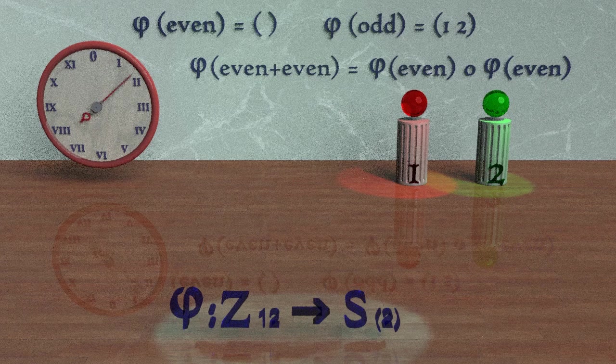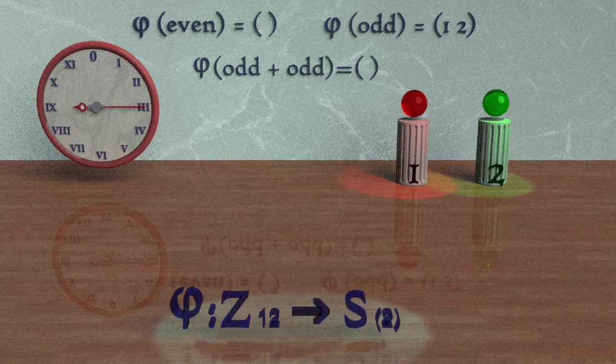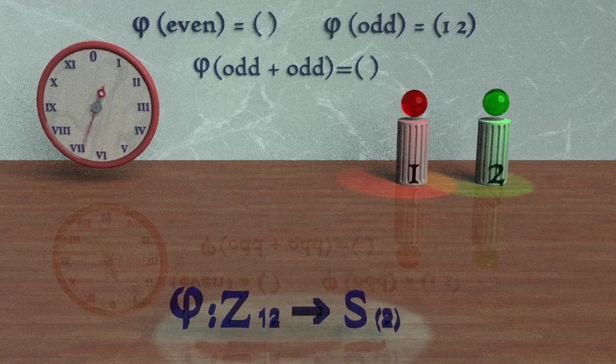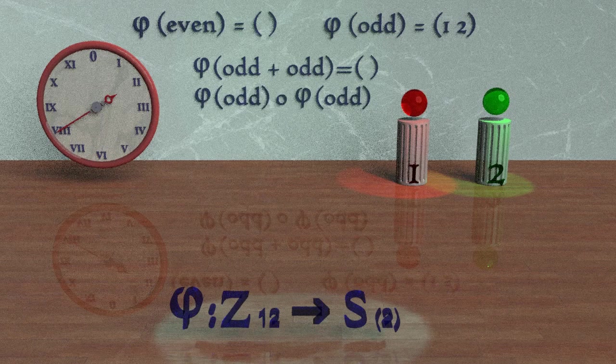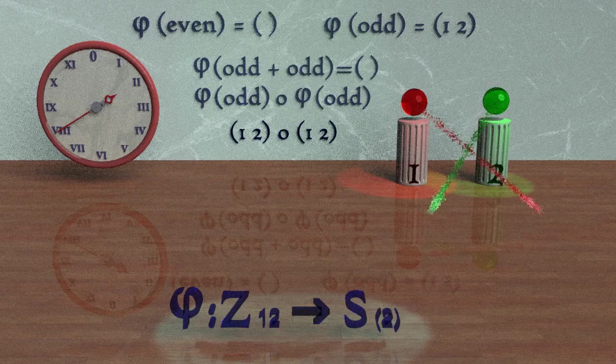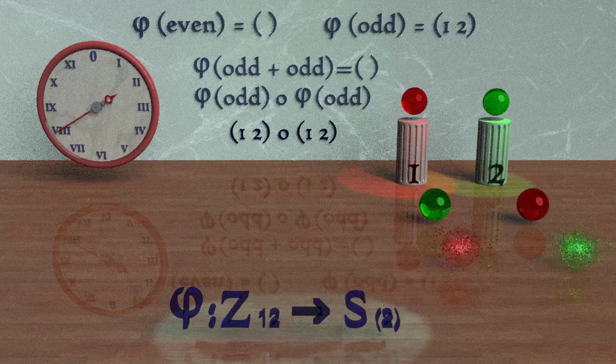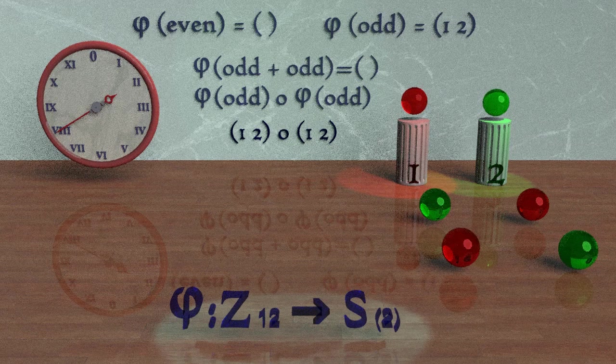Let's look at what happens for an odd integer plus an odd integer. This will give us an even integer. So if we take the phi of an odd plus odd, this gives us the identity element in the second group. But if we were to map over the odd integers first, we get the element (1 2) followed by the element (1 2). Since this is a transposition element, its own inverse, (1 2) followed by (1 2) does give us the identity.